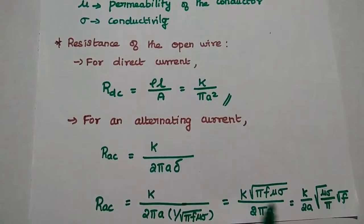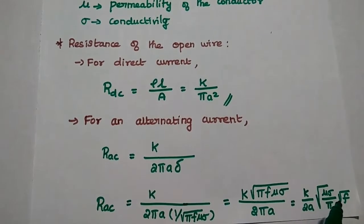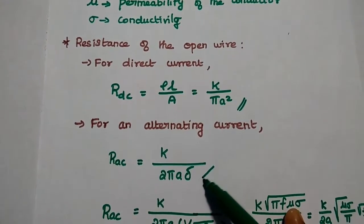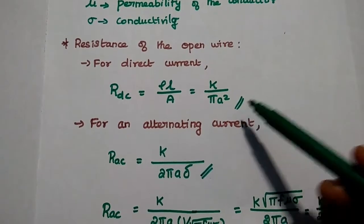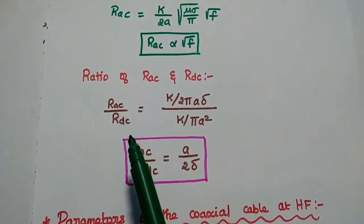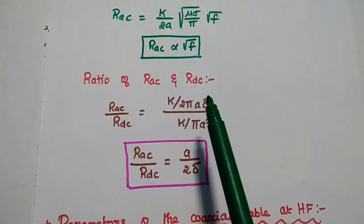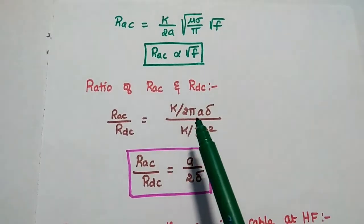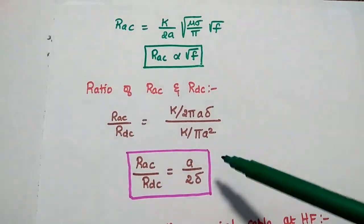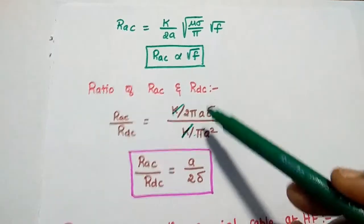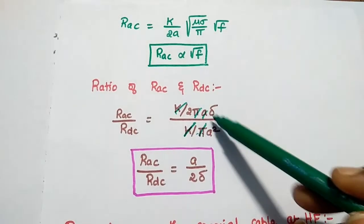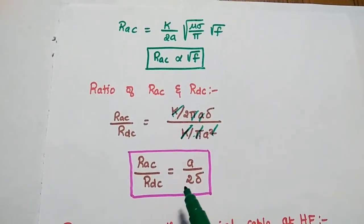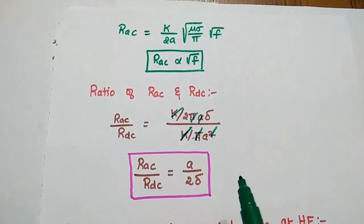The value of R_AC is directly proportional to the frequency. The ratio of R_AC to R_DC is obtained as: R_AC/R_DC = [K/(2*pi*A*delta)] / [K/(pi*A^2)], which simplifies to R_AC/R_DC = A / (2 * delta).